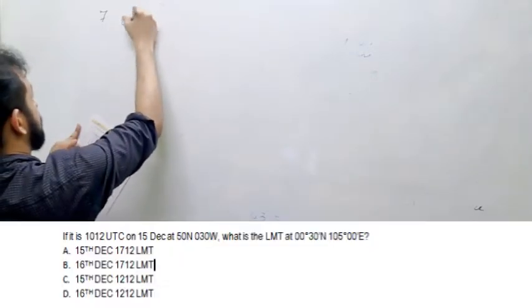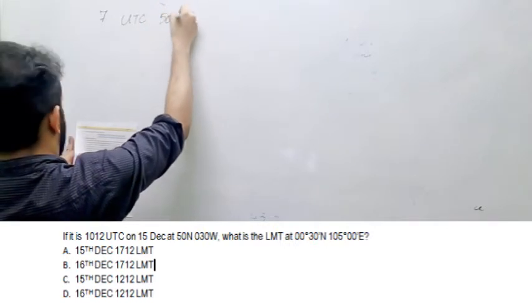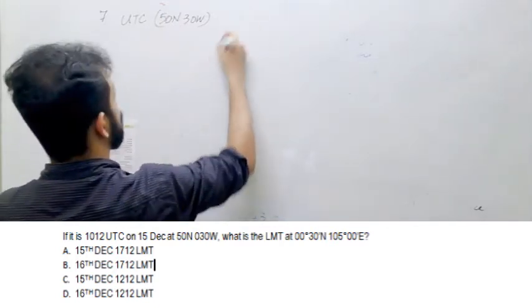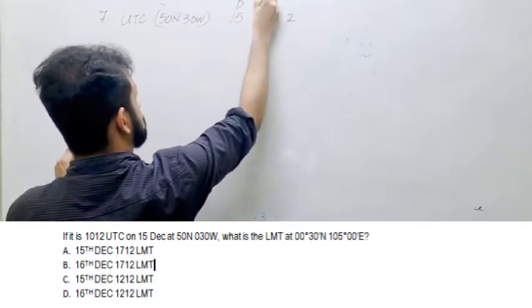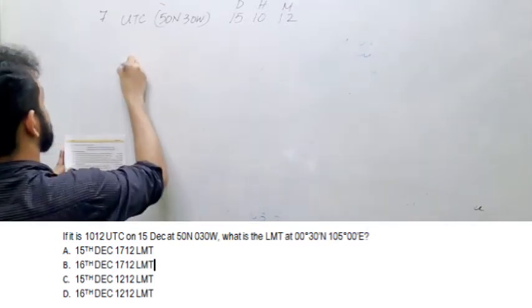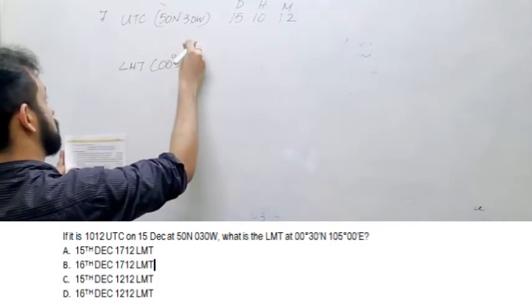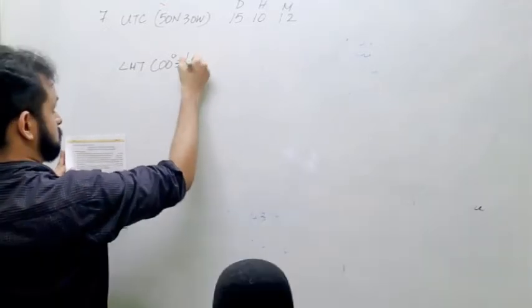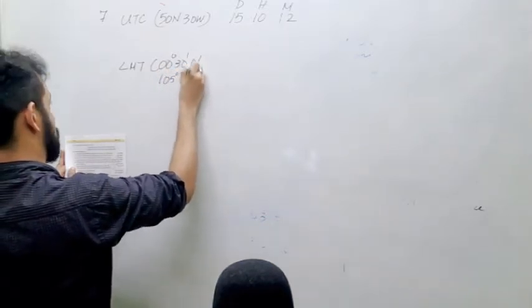So you are given the UTC on 50 North 30 West is given as 1012 on 15th of December, day or month. You are asked to find out what is the LMT on 0 degree 30 minutes north, 105 degrees east.